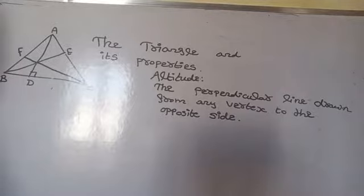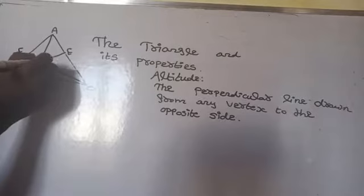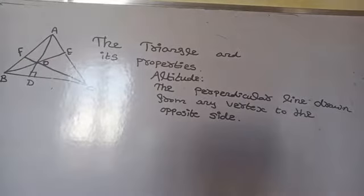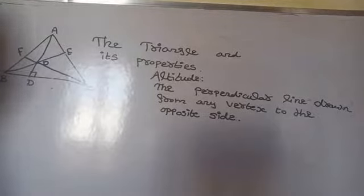Where all three altitudes intersect, that point is called the orthocenter. Remember: where all three medians intersect, that is called the centroid. Where all three altitudes intersect, that is called the orthocenter.